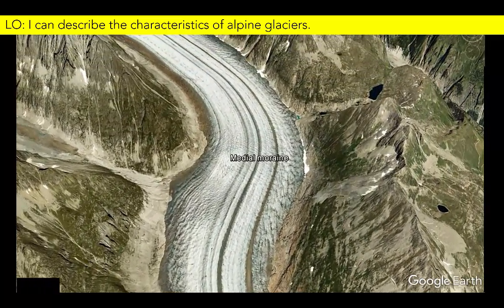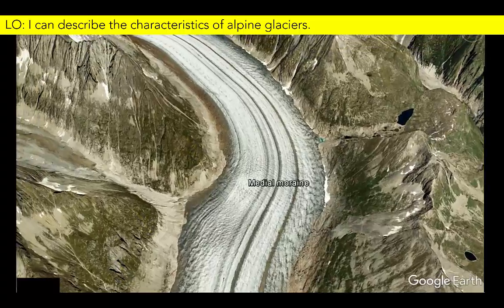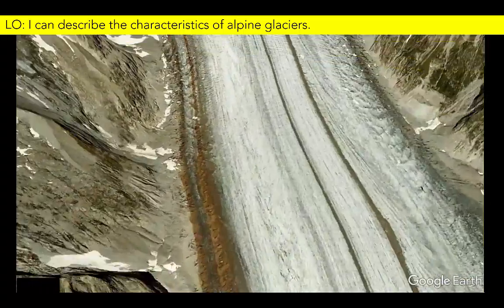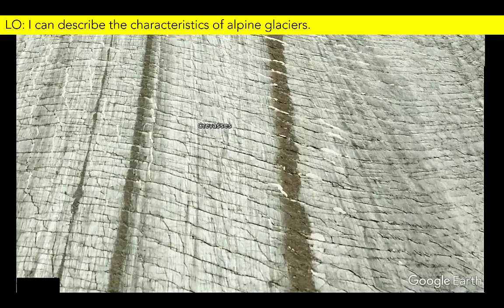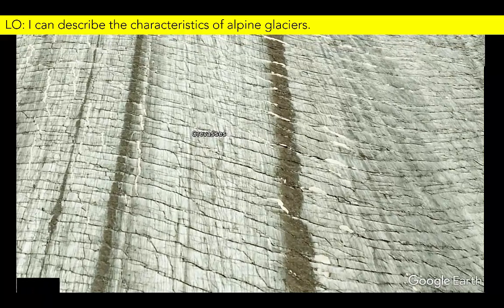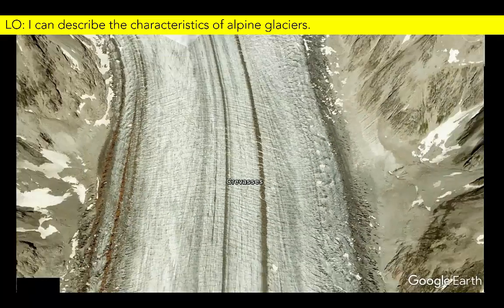We can follow this sediment a little further along where we notice dark bands, known as medial moraine, that transport sediment along the glacier. Notice the bathtub ring-like feature along the valley sides, indicating that the glacier used to be larger and thicker and occupy more of the valley. Zooming in on the surface of the glacier, we can see cracks in the ice, known as crevasses, that form above locations where the base of the glacier moves over a step in the valley floor.